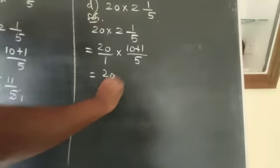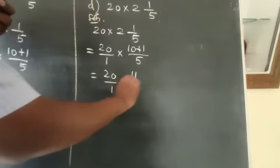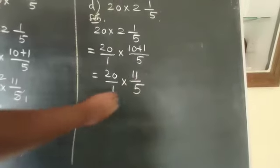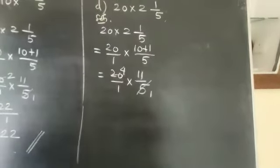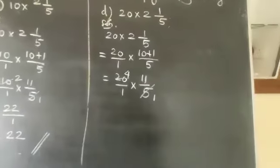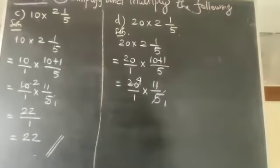Cancel with the denominator: 5 into 5 is 1, 5 into 20 is 4. Now we have 4 × 11.